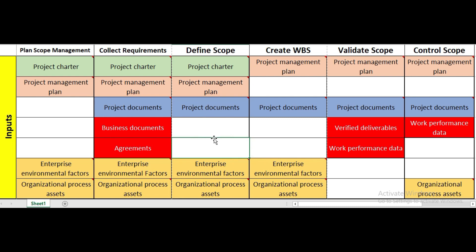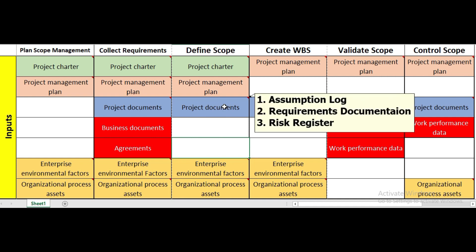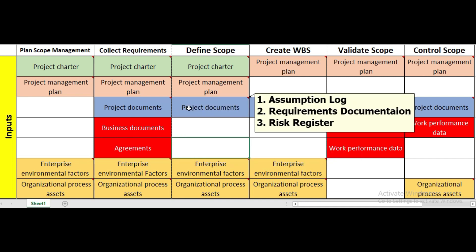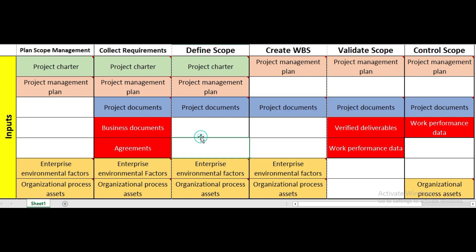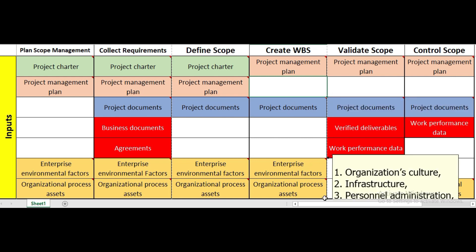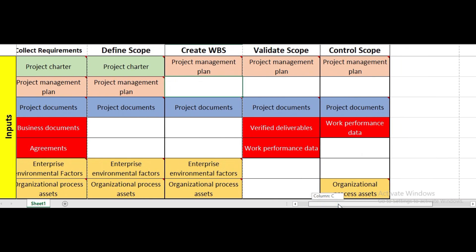In define scope, the inputs are project charter, project management plan, and project documents — the same as in collect requirements. However, the specific project documents differ: define scope uses the assumption log, requirements documentation, and risk register instead of the stakeholder register. For create WBS, the inputs are project management plan and project documents, specifically the project scope statement and requirements documentation.